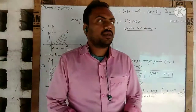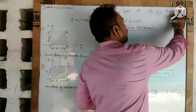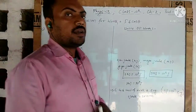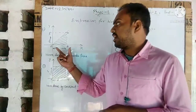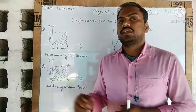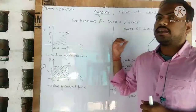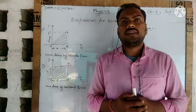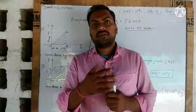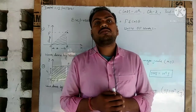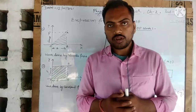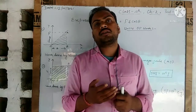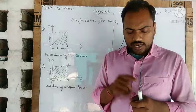Hello dear students of Class 10. Here we are going to start Part 4 of the second chapter. In this topic I will cover the work done, the graph of work done by a variable force, the graph of work done by a constant force, and units of work. In the previous part of the second chapter we discussed the formula and expression of work, and how to find the component of force along displacement and component of displacement along force.